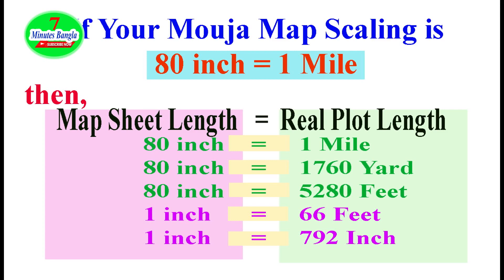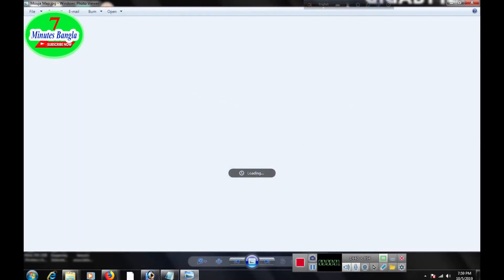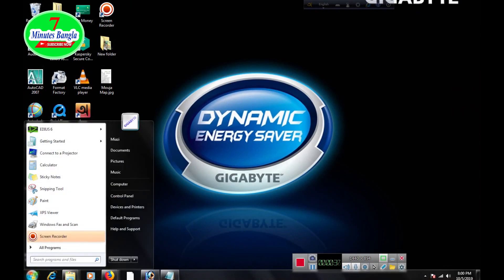So one inch of map sheet length is equal to 792 inches of your site or field. Viewers, look at the screen — this is the summary of what I discussed earlier: the comparative relation between moza map and real plot. Our moza map uses the 16 inch equals one mile scale, meaning 16 inches is the sheet size and one mile is the real plot length. The real area is one mile and the sheet area is 16 inches. Now let's start AutoCAD software.